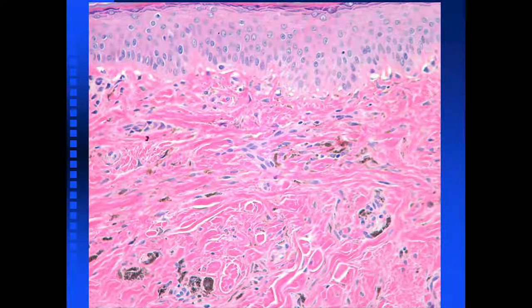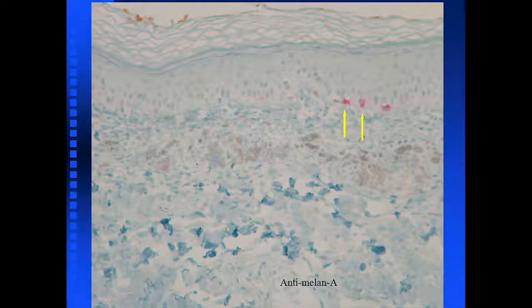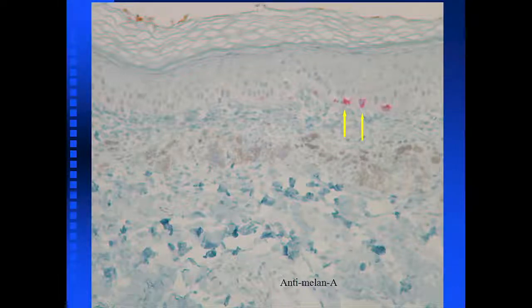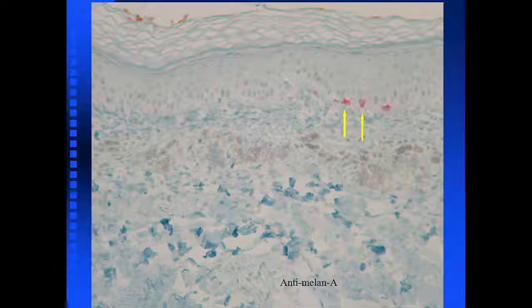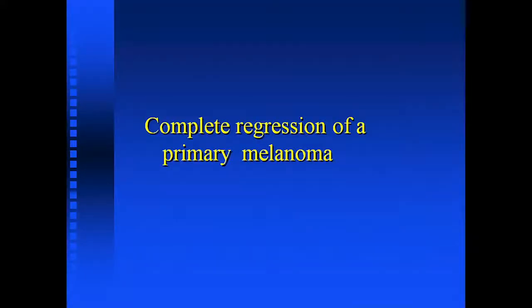Looking at the melanostain, there was absolutely nothing there. This is very strange because with the melanostain there should be melanocytes — normally 1 to 4 to 1 to 10 keratinocytes, that's the average amount. Notice you only find 2 or 3 here. So this is complete regression of a primary melanoma.